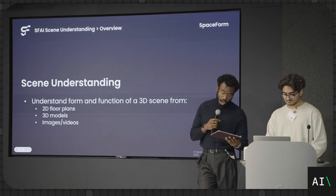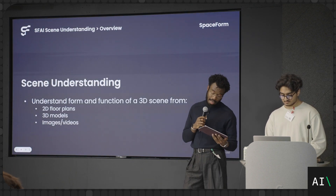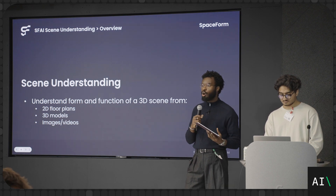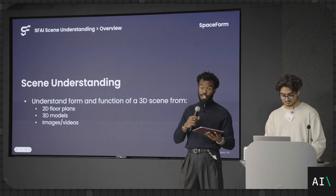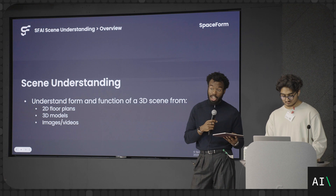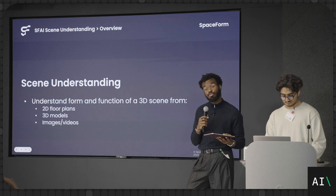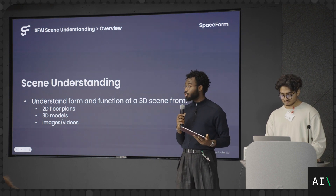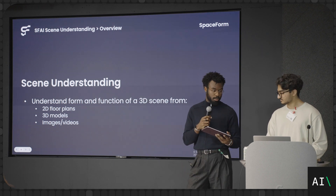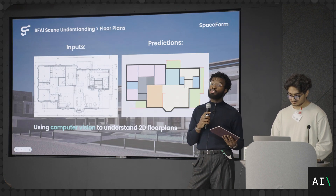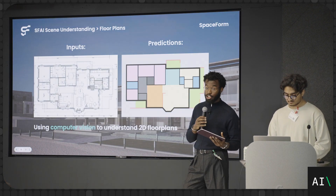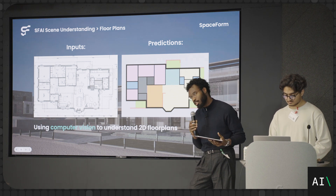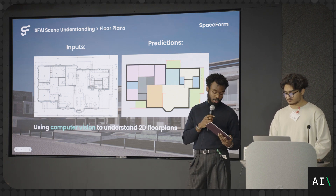Understanding our scene boils down to the following: we want our intelligence to be able to hold the context of the geometry, topology, and purpose of a scene, whilst making decisions about which assets to choose and where to put them. We've used AI to predict the nature and geometry of interior spaces from 2D floor plans from our architects.